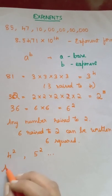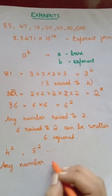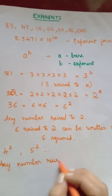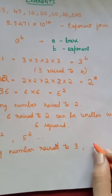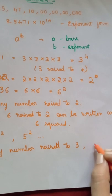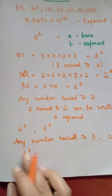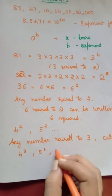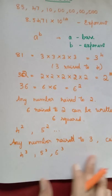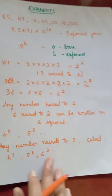Any number raised to 3, these are some of the common terms, any number raised to 3, that is said as cubed. So 4 raised to 3 is 4 cubed, 5 raised to 3 is 5 cubed, 6 raised to 3 is 6 cubed, and so on. So raised to 2 is squared and raised to 3 is cubed.